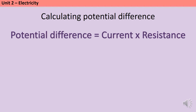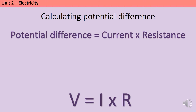The potential difference across a component can be found by multiplying together the current and the resistance. Now all of the quantities that we met in the energy topic had quite sensible shorthands: E for energy, M for mass, H for height. In electricity the shorthands start getting a bit more interesting. So this equation is more commonly known as V equals I times R.